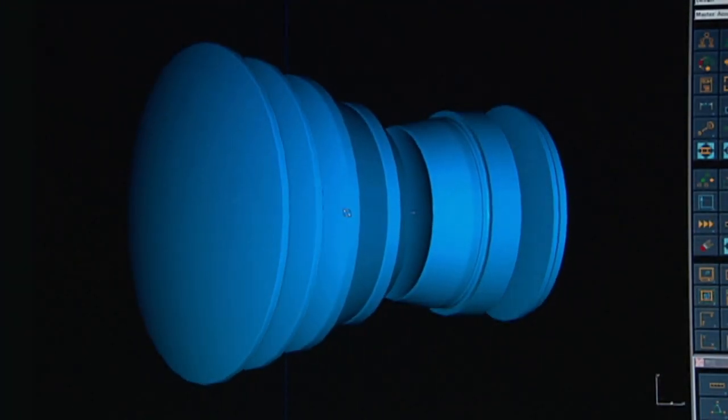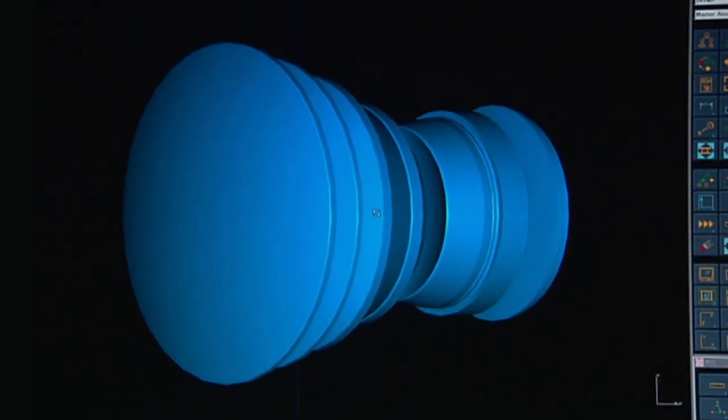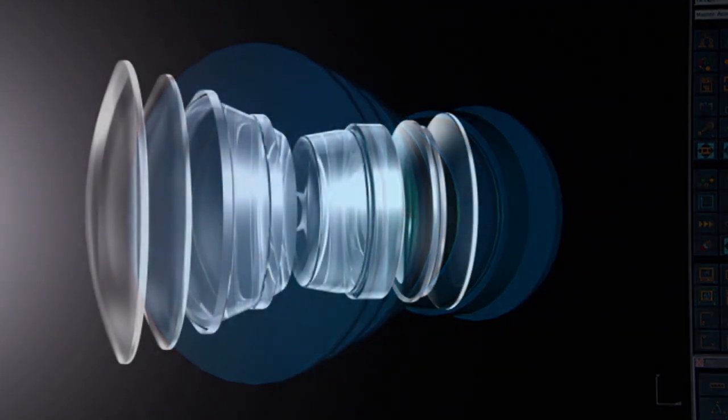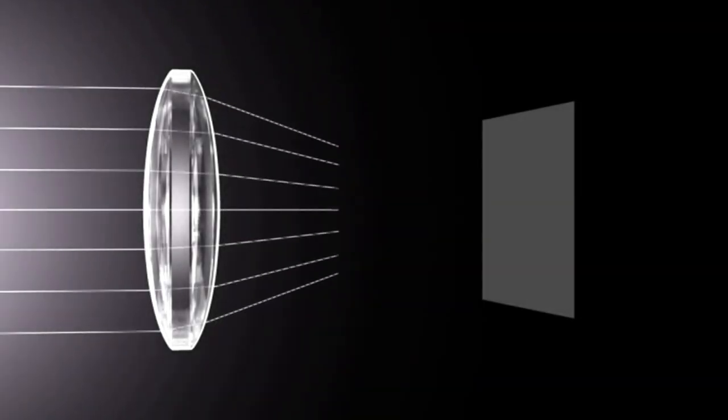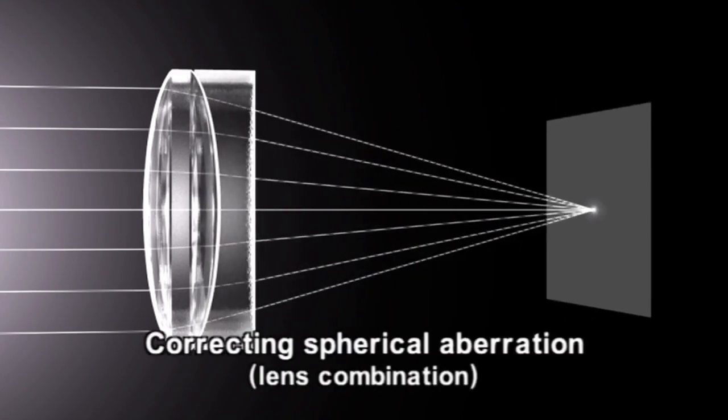The first step toward correcting aberrations is to combine lenses with different characteristics, such as convex and concave lenses. Spherical aberration occurs in opposite directions in the case of convex and concave lenses, so aberrations can be corrected by combining these two lens types.